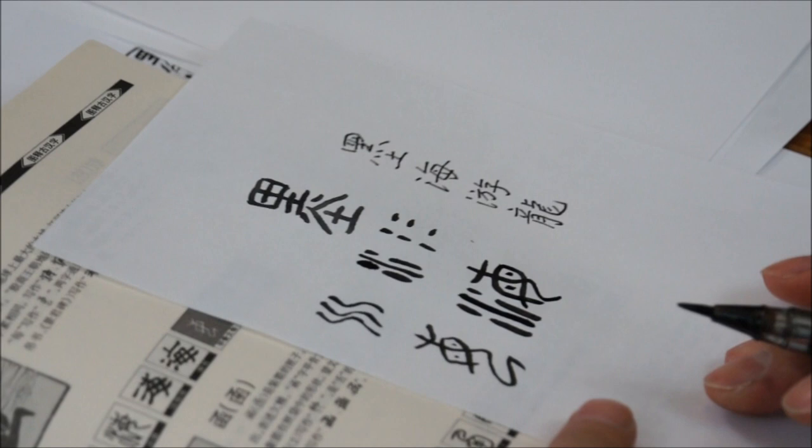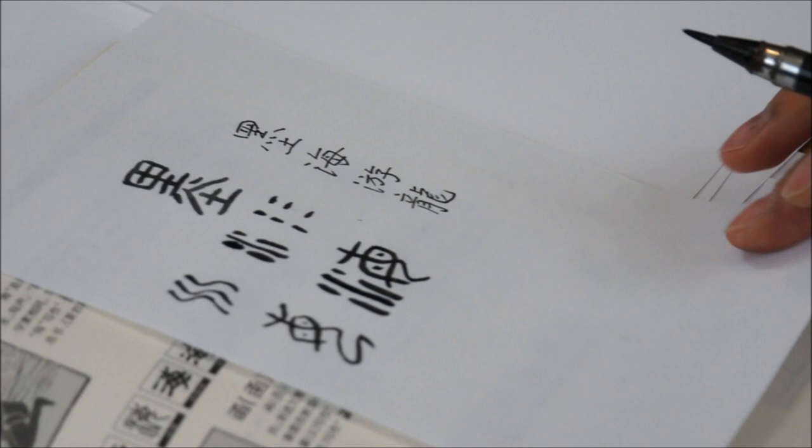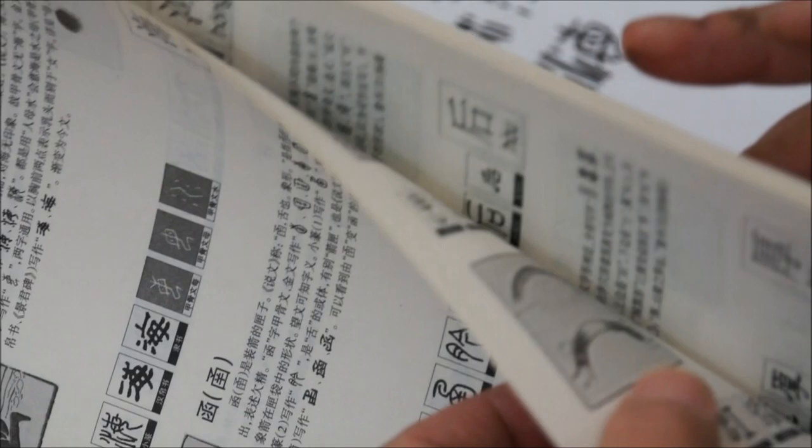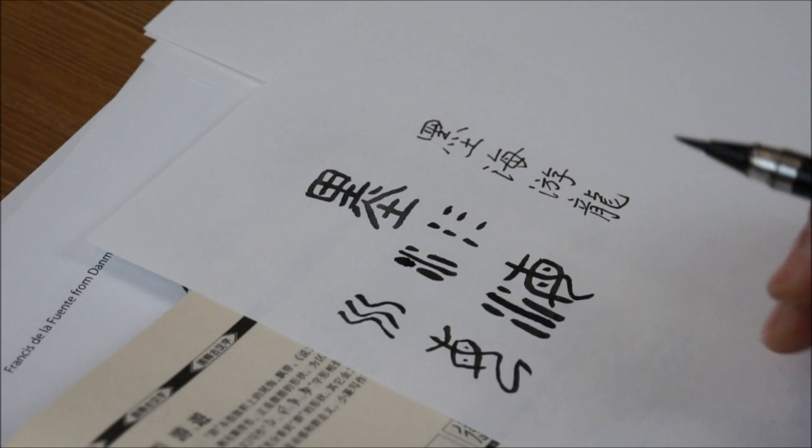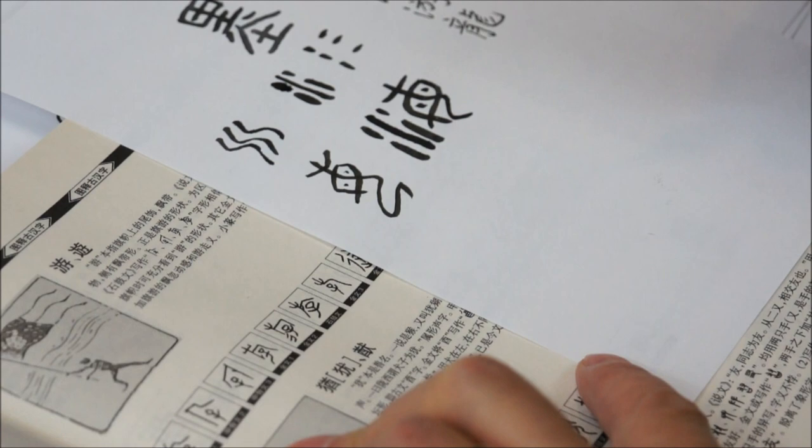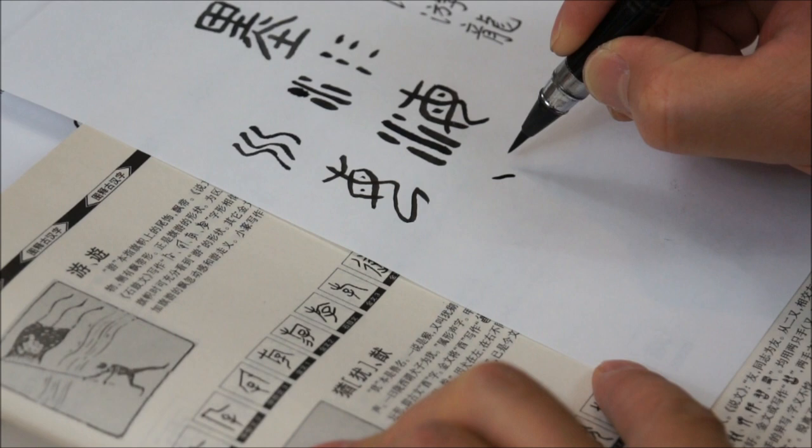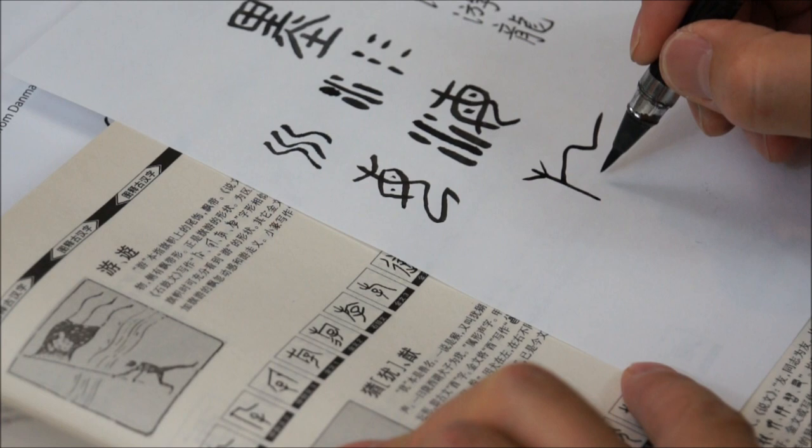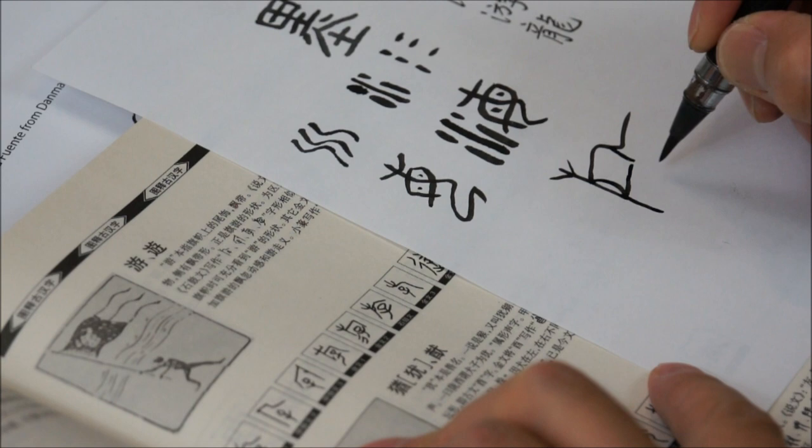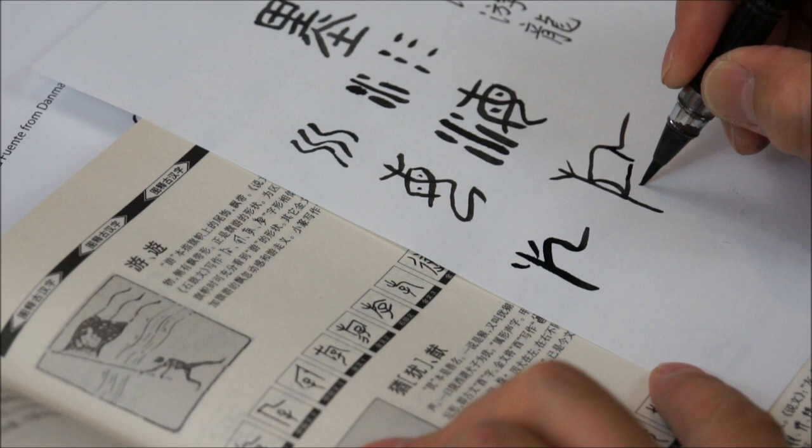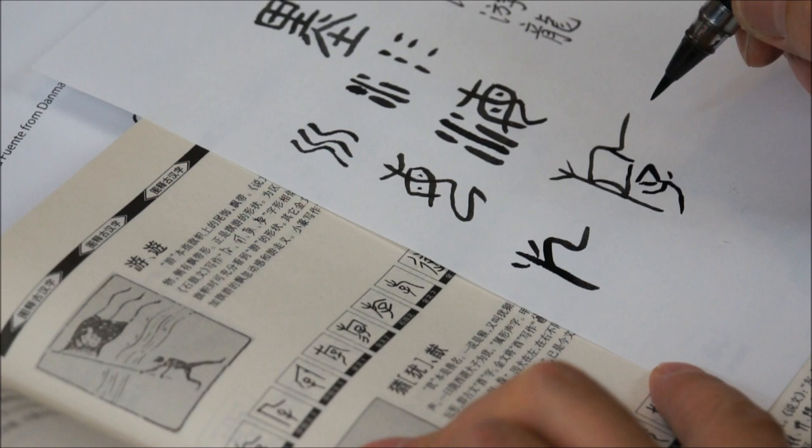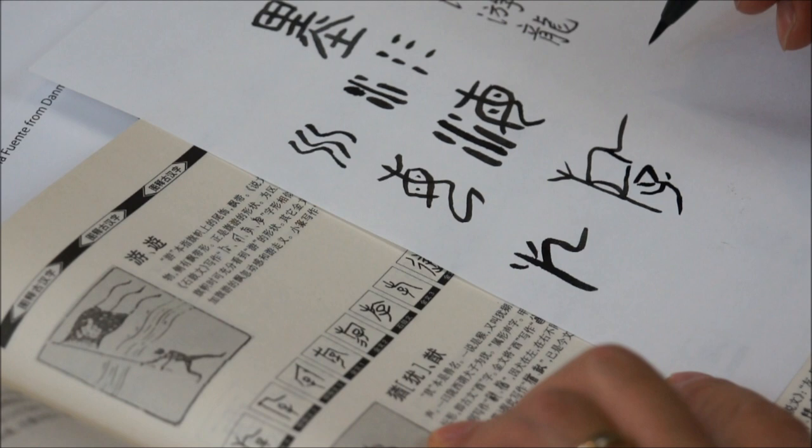And the third character is you, means to swim or to float. Actually the original meaning is a flag, and a man holding a flag. So this is the flag pole, and this is the flag, this decoration. Sometimes you can see the flag more like that. And it becomes more abstract. Then another character under the flag, it's like it's shown in this picture, holding the flag.